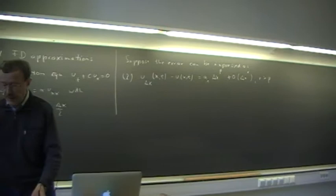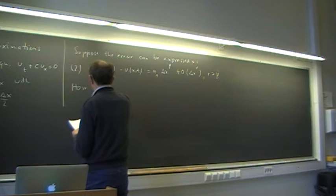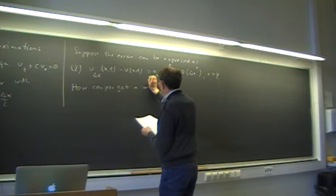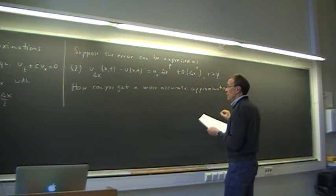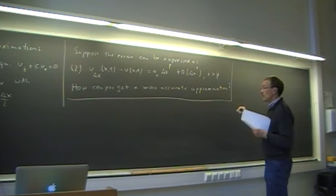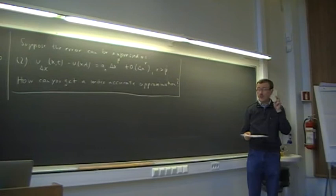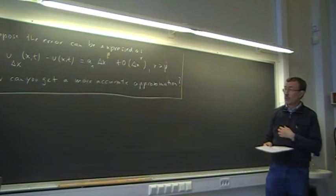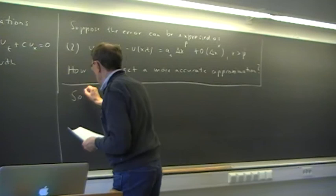The question is the same: how can you get a more accurate approximation? The first part we looked at before the break was regarding discretization of an ODE using two different time steps, delta t and delta t half. Here we want to do the same thing for PDE discretization using delta x and delta x half. So let's look at the solution to this.